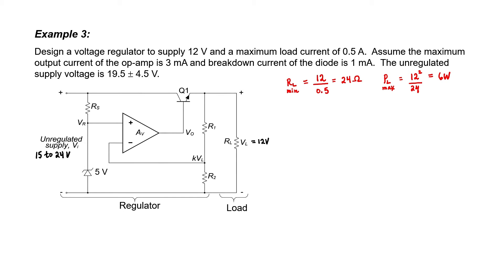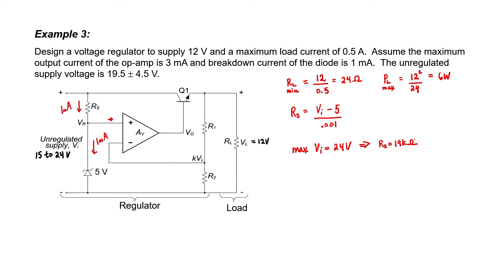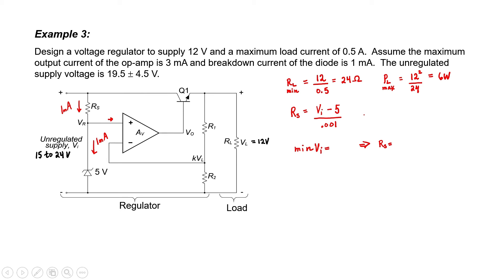We're told in the problem that the breakdown current of the diode is 1 milliamp. Therefore, at least 1 milliamp has to flow down through the Zener diode. We can assume that very little current flows into the op amp, so R sub S has to be sized so that at least 1 milliamp can flow through it. Should we use the maximum or minimum input voltage to size R sub S? If we try the maximum input voltage, that implies R sub S needs to be 19 kilo ohms — but then when V sub i is 15 volts, only 0.5 milliamps would flow, which is not enough. Therefore, we should use the minimum value of the input voltage to find R sub S.